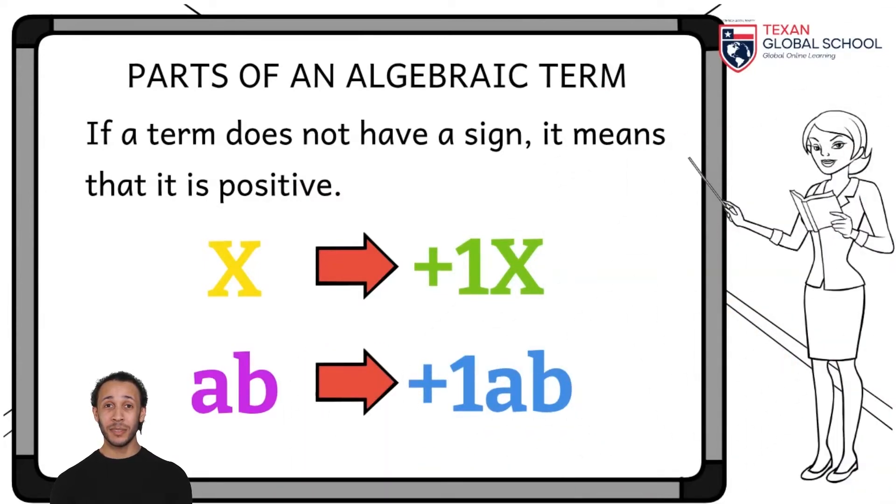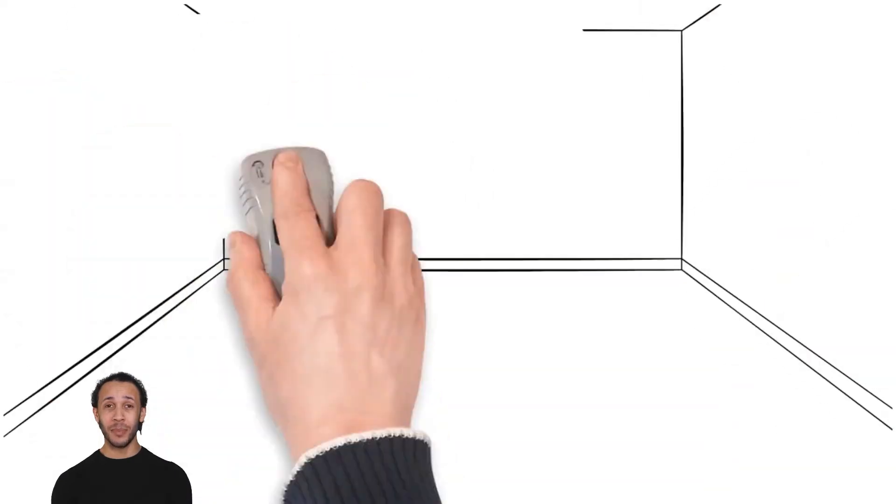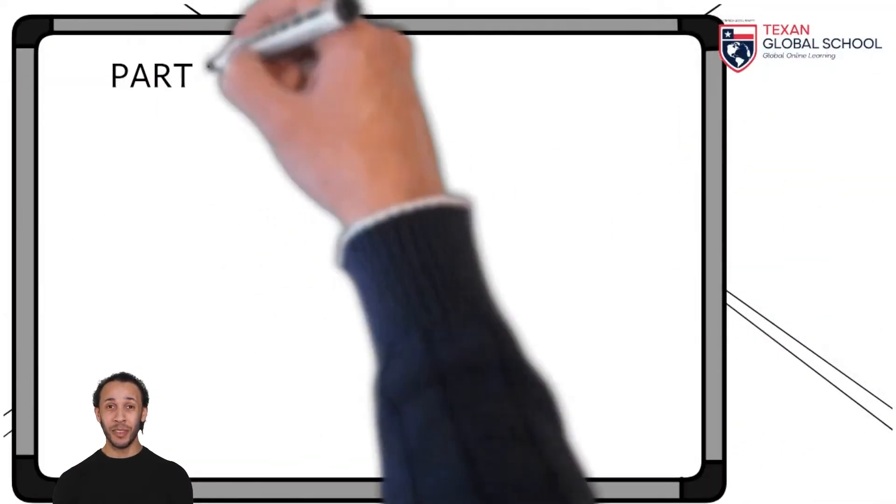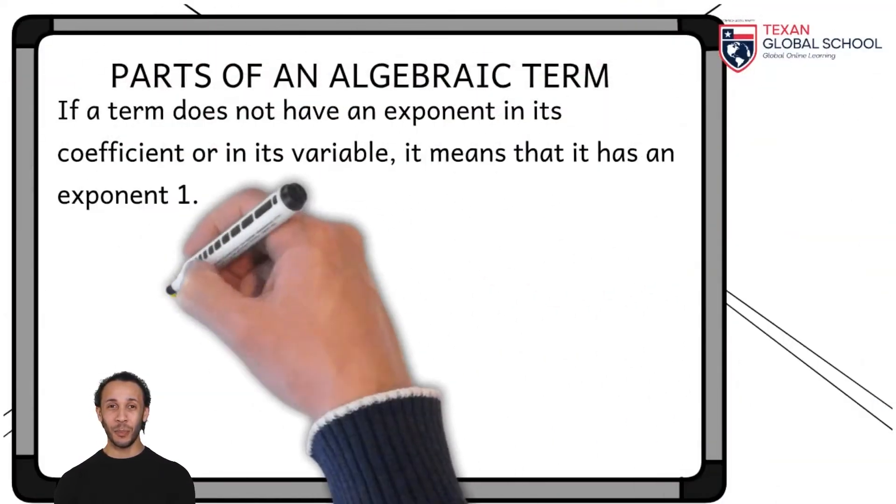Using the same examples, x, or the product ab, both have a numerical coefficient of 1, and therefore a positive sign.